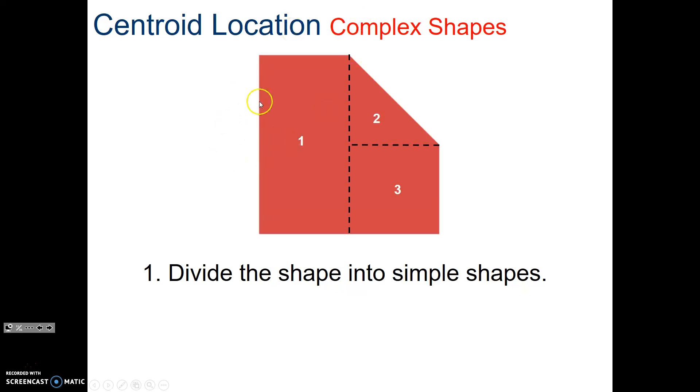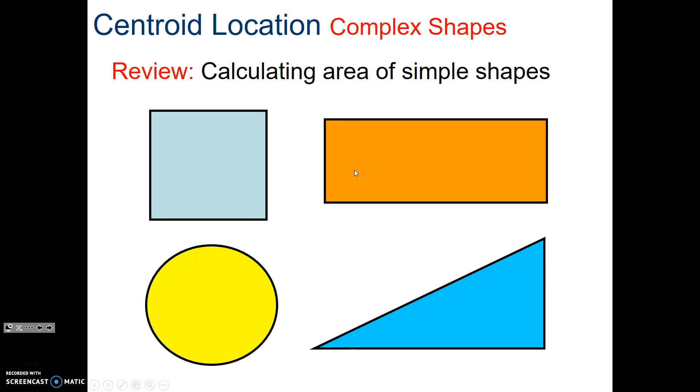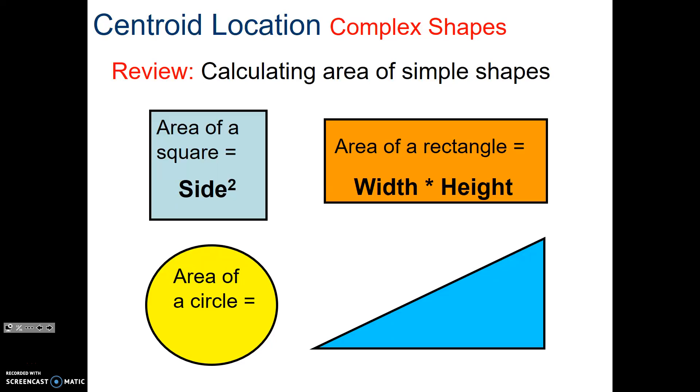We've got now a rectangle, a square, and a triangle. Then we're going to look at their locations. We're going to have a reference. We're going to say, where is 0,0? We can say 0,0 is down here, or there, or in the middle. It doesn't matter.